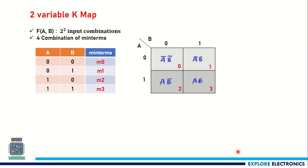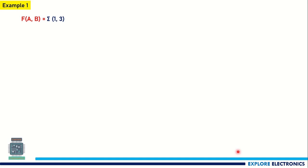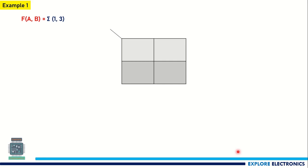This is how we write a two variable KMAP. For example, F(A,B) = Σ(1,3) represents min terms 1 and 3. We require four cells since it is a two variable expression. A and B are arranged accordingly, giving cells 0, 1, 2, 3. In the given expression, min terms 1 and 3 are present, so we write logic 1 in cells 1 and 3, and 0 in the others. We then group the cells containing logic 1, grouping adjacent cells together.